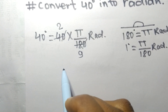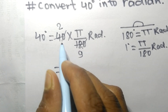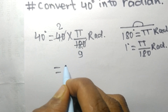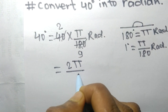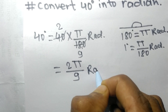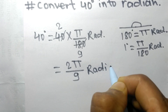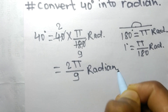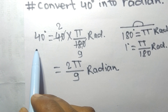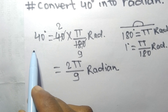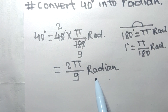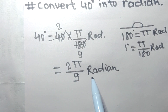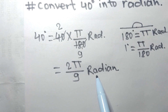So it is 2 times pi, meaning 2 pi by 9 radians. Therefore, 40 degrees is equal to 2π/9 radians. That's all for today — thanks for watching.